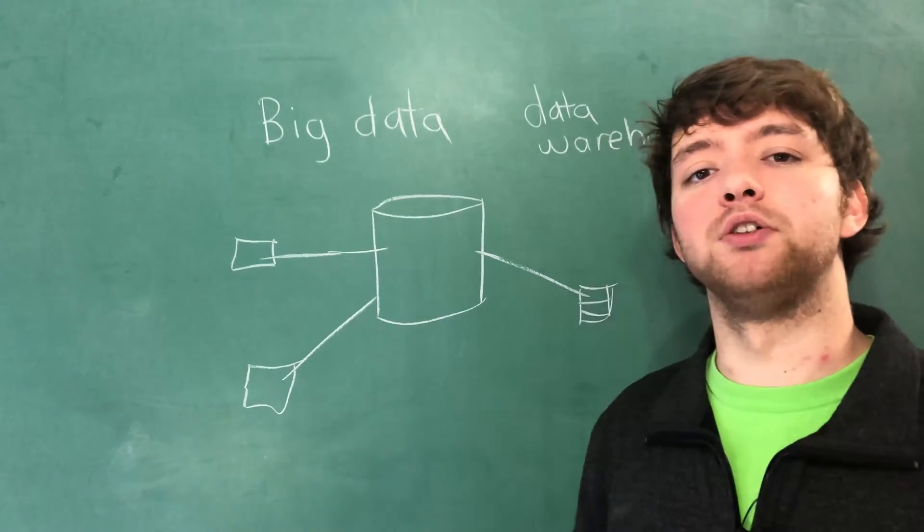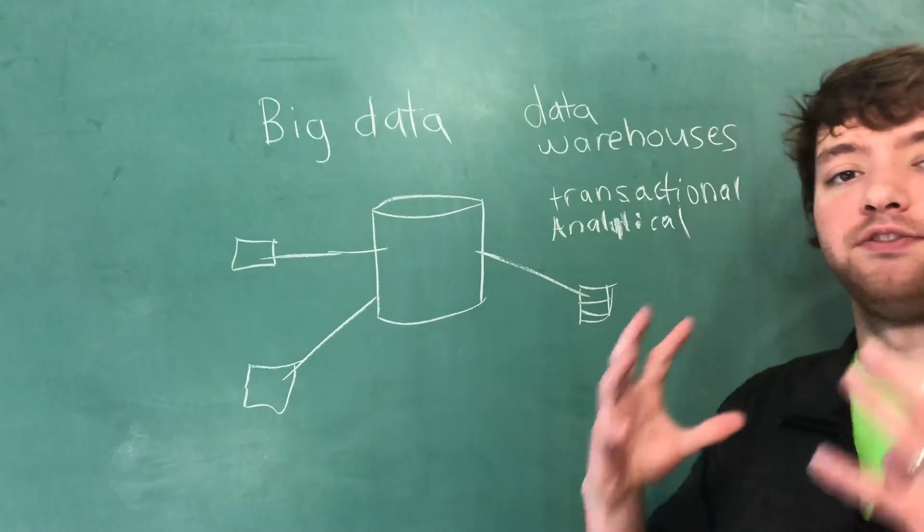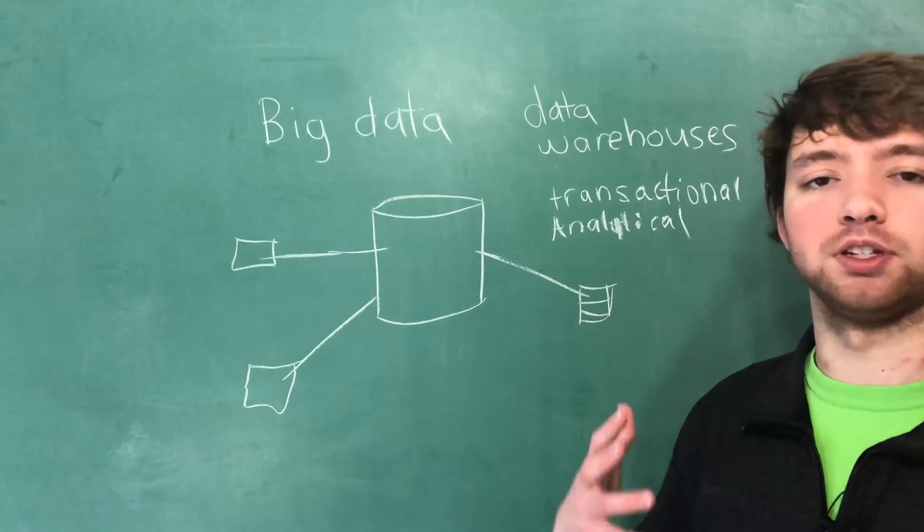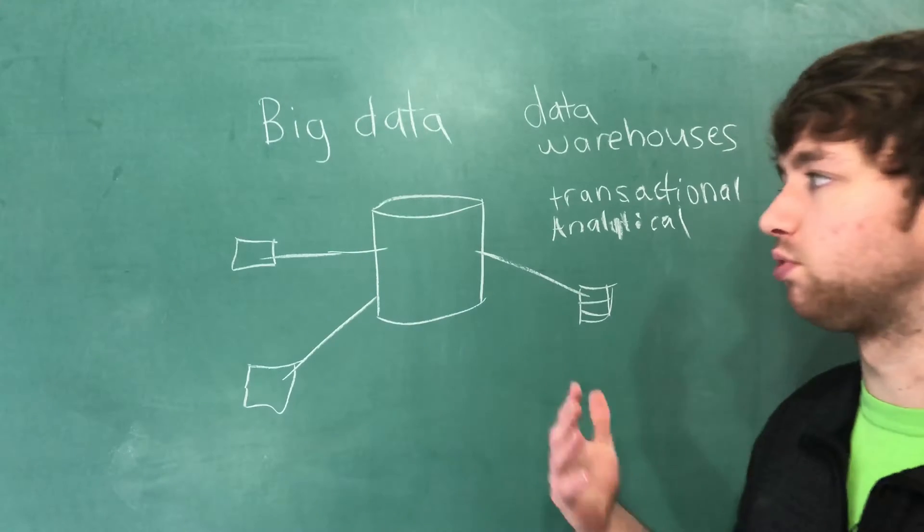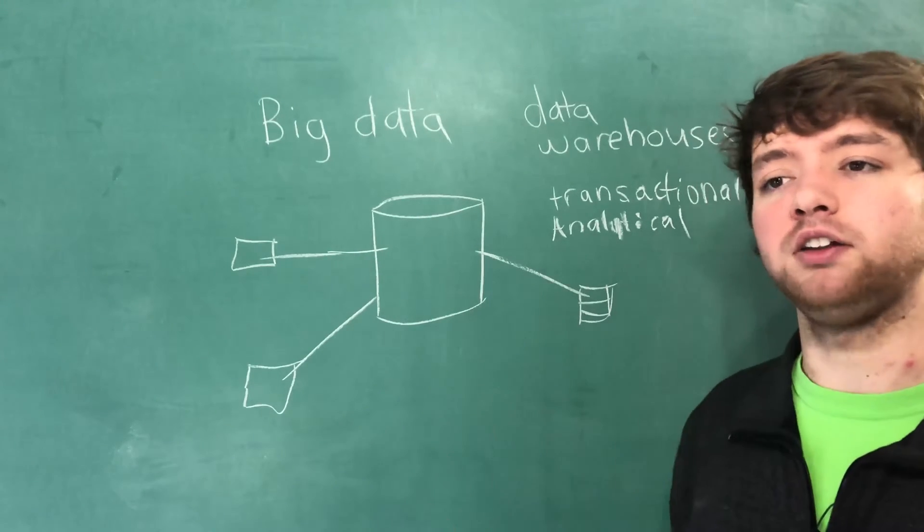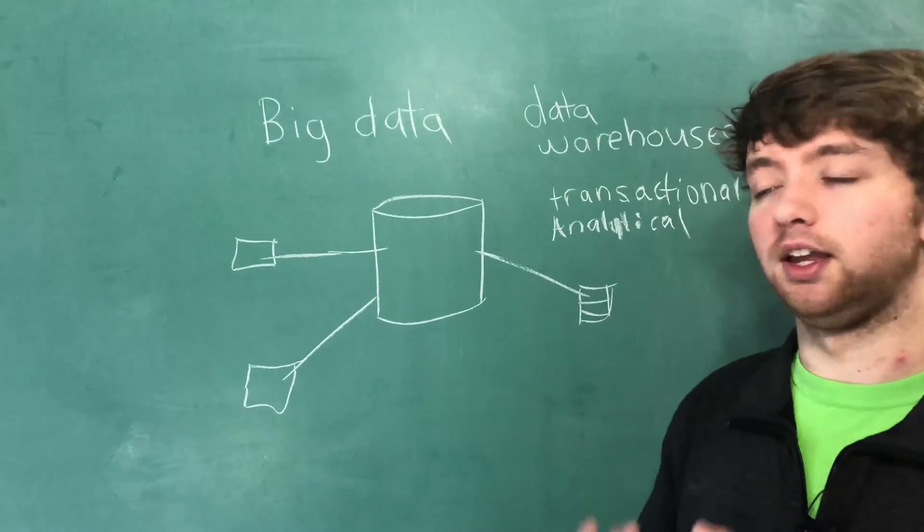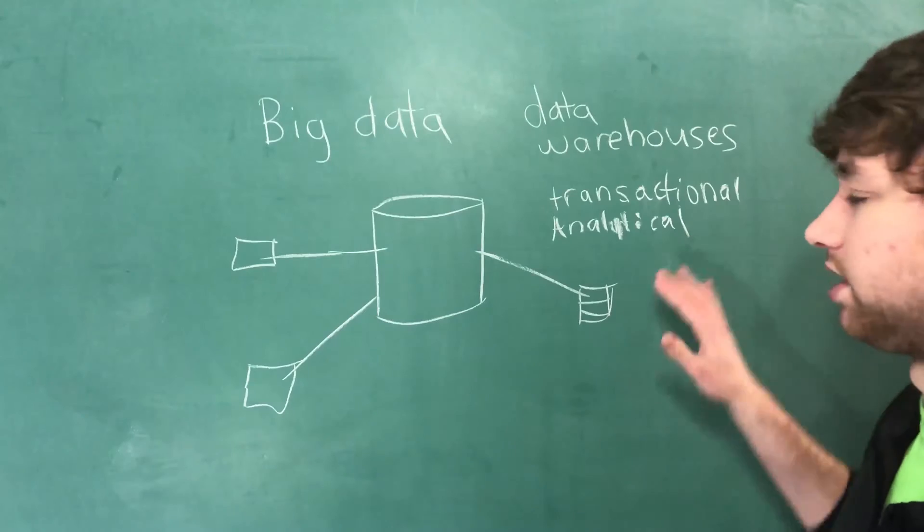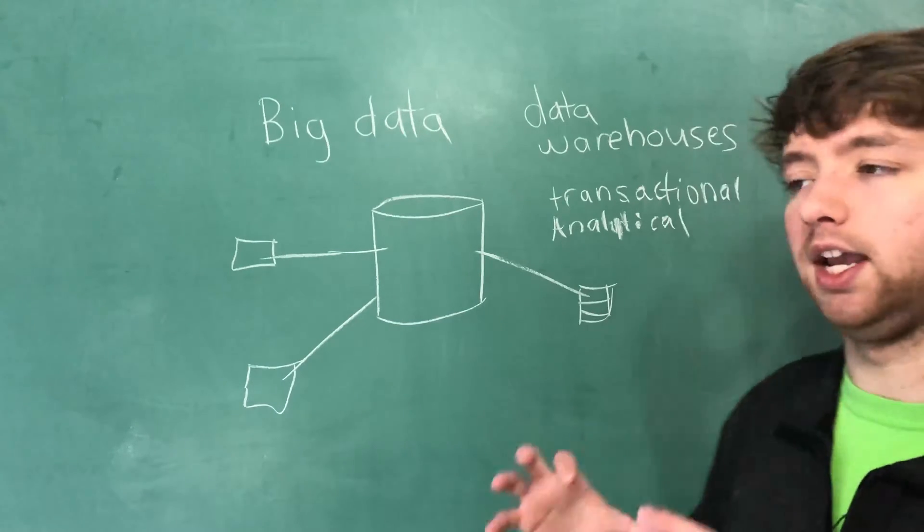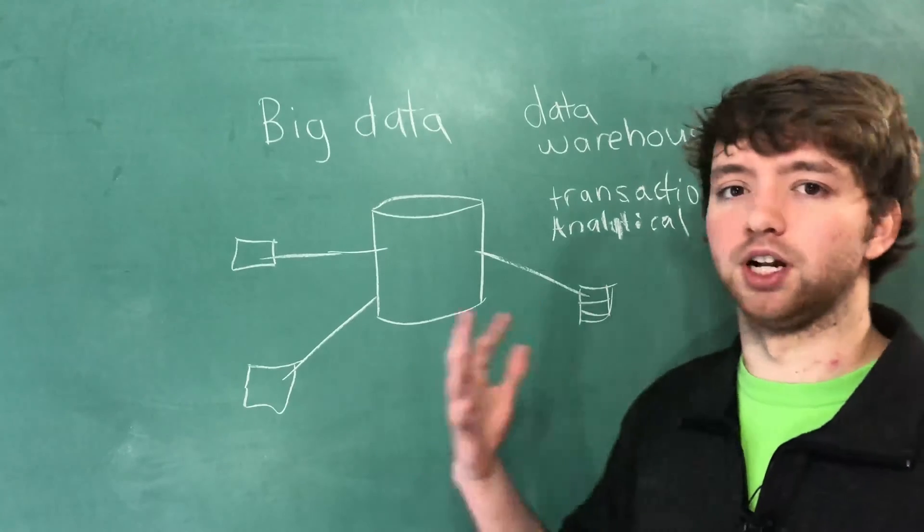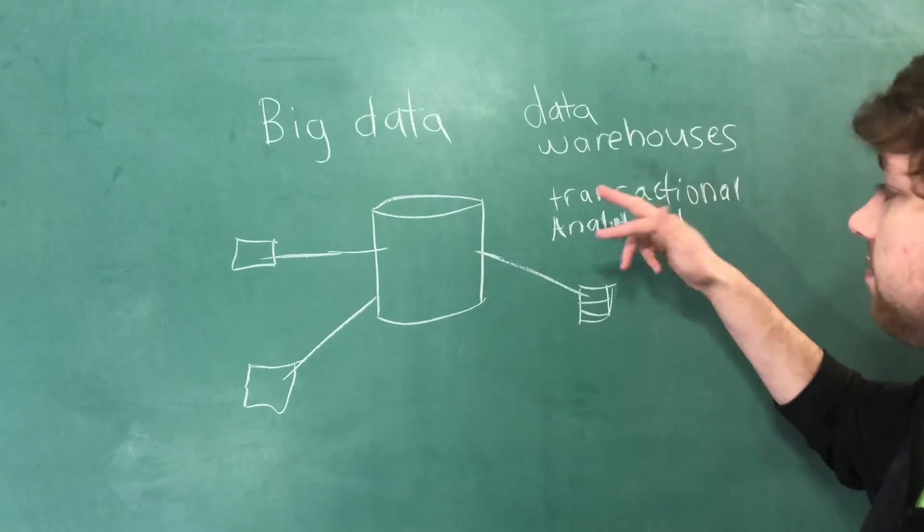So there's two real types of processing when we're talking about databases or data processing. One is transactional and the other is analytical. A transactional data store would be efficient and good for a system such as a web store where you're buying things and selling things. That's because we're going to be having a lot of little inserts and updates and deletes. Whereas an analytical system is more designed for the SELECT statement, and it would not be optimal for a web store. So these are kind of two different types of systems out there.